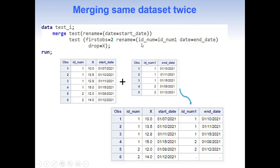For the second dataset, I also rename id_num to id_num1 and rename the date variable to end_date. Since I don't want the x variable again from the second dataset, I drop it. After renaming and dropping, the second dataset looks like this. Now SAS merges these two datasets without a BY statement, so the first observation in the first dataset merges with the first observation in the second dataset, and so on. For the sixth observation, there is no counterpart, so it will have a missing value.